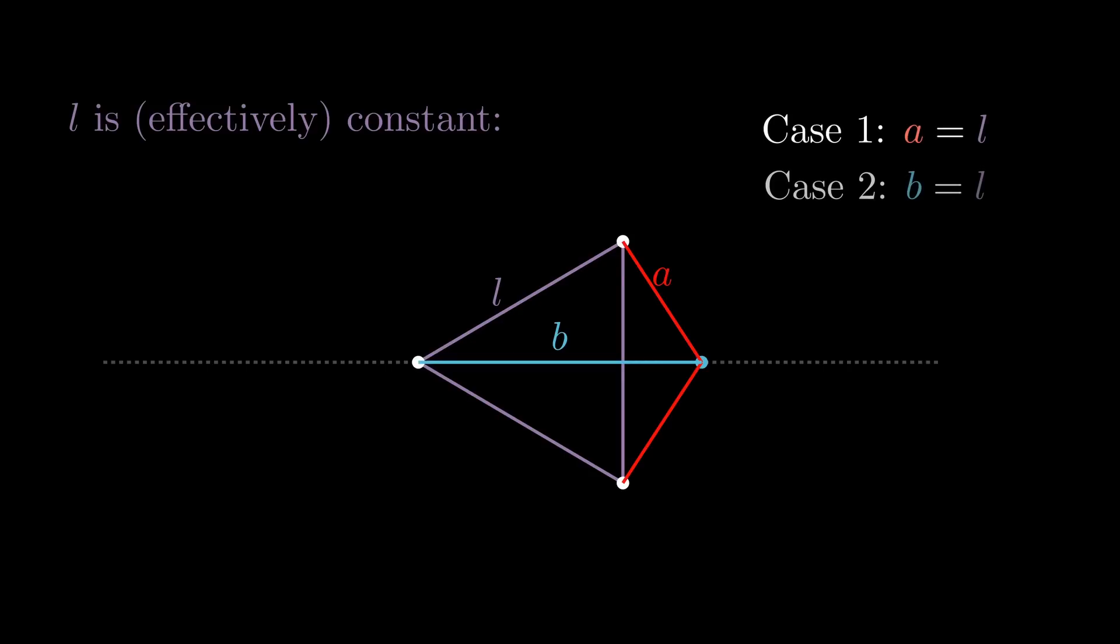Then there are three possible cases in which our two distance rule is obeyed. Case 1, A equals L. Case 2, B equals L. Or case 3, A equals B.